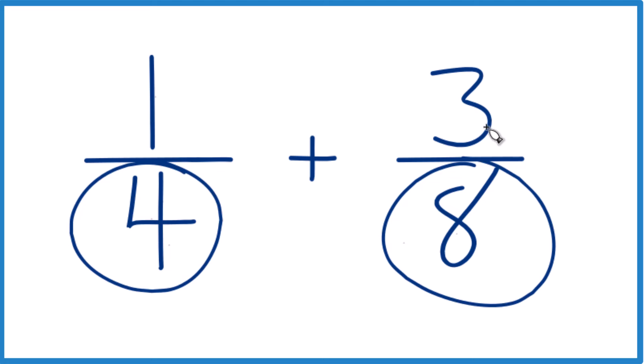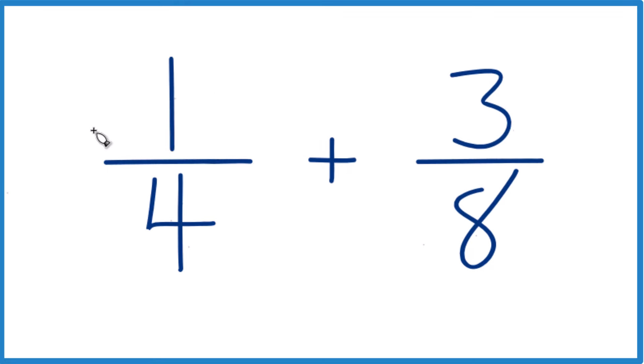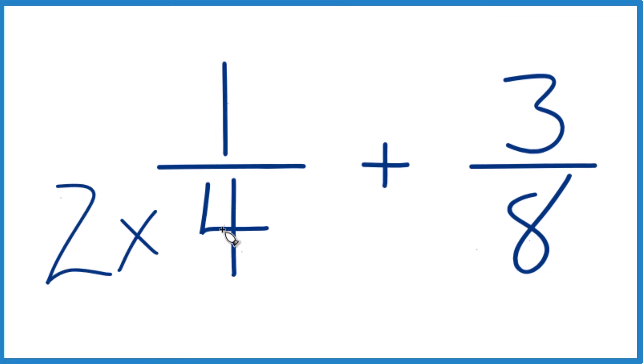Then with fractions, we'll just add the numerators, keep the denominator the same, and we'll be done. Why don't we do this? Why don't we say 2 times 4? 2 times 4 equals 8, and we have 8 over here already.